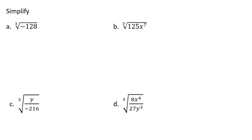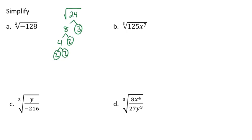In this video, we're going to be simplifying cube roots. Recall that when we're simplifying a square root, like the square root of 24, we would break it down into the prime numbers, and then we would look for pairs of numbers because we're finding the square root. So that leaves us with 2 radical 6 in this case. Just like a square root looks for pairs, a cube root is going to look for 3 of a kind.